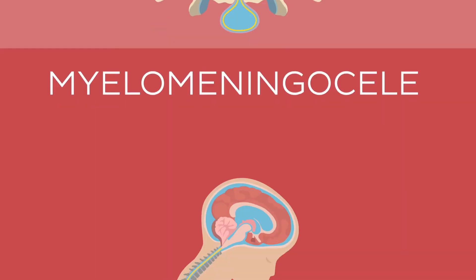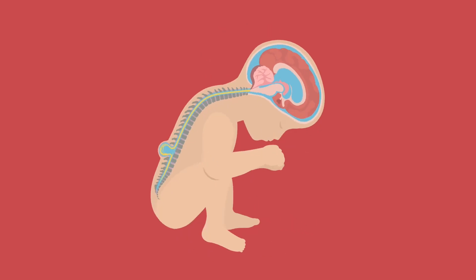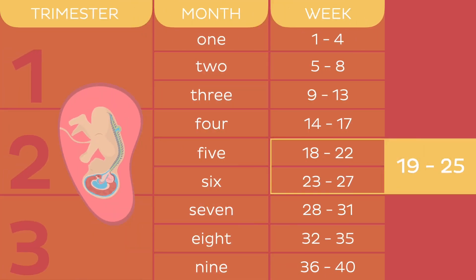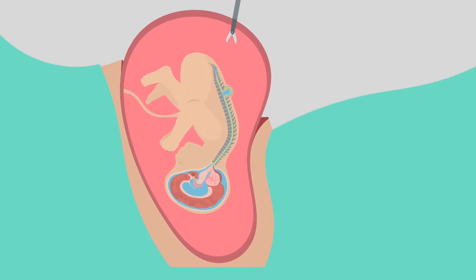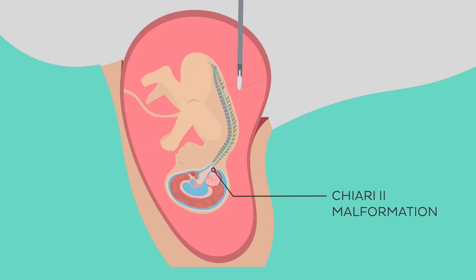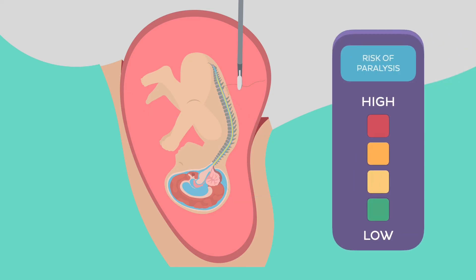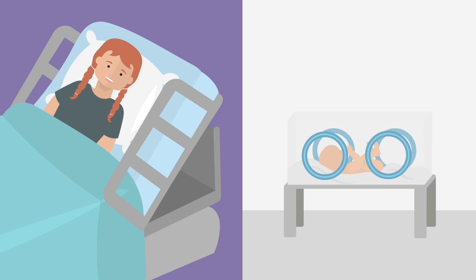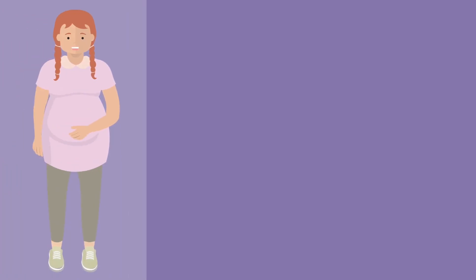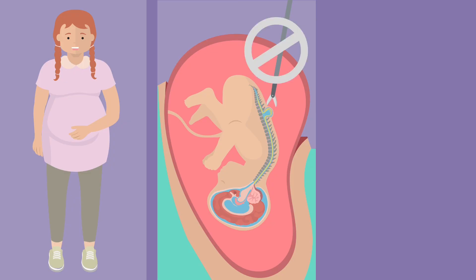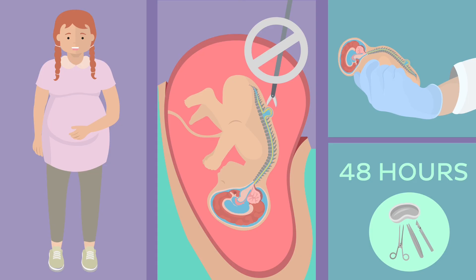Myelomeningocele is a much more complicated condition. In some cases, the surgery can be performed in utero as early as between the 19th to 25th week of pregnancy. During this surgery, the spinal cord is pushed back into the spinal canal and the bony defect is closed. The inclusion criteria for this surgery are the presence of Chiari 2 malformation as well as a defect in the lumbar region. Such early intervention has shown to decrease the risk of paralysis and other debilitating symptoms later in life. However, this surgery bears high risks of premature birth as well as risks for the wellbeing of the mother. If spina bifida aperta is discovered only later during pregnancy or doesn't meet the intrauterine surgery criteria, the surgery is performed after birth, usually within the first 48 hours of the baby's life, while the likelihood of complications such as infections is still low.